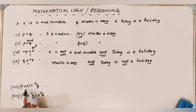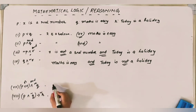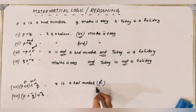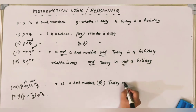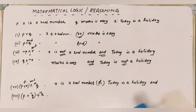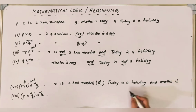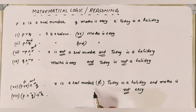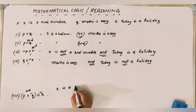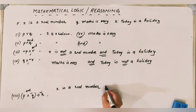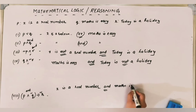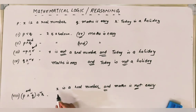For (P OR R) AND NOT Q: 'X is a real number OR today is a holiday AND maths is NOT easy.' For P AND NOT Q: 'X is a real number AND maths is NOT easy.'